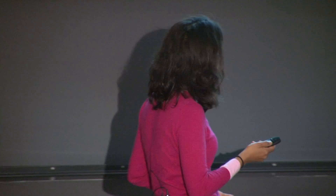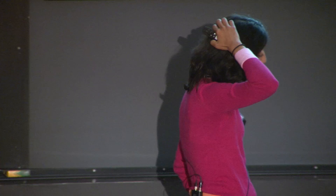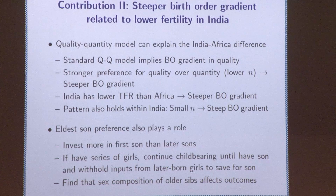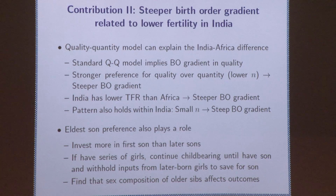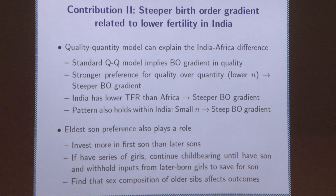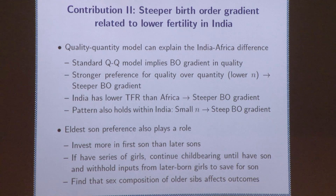We wanted to understand why this stronger preference comes from. This is the new part of the paper — a theoretical contribution. We're going to present a very standard quality-quantity model in economics that originates with Gary Becker and Robert Barrow, and show that model has an implication that hasn't been noticed before: it generates a birth order gradient in child quality. For families that have a stronger preference for quality over quantity — smaller family size — they're going to have a steeper birth order gradient in such a model. That offers an explanation for why birth order gradients would be steeper in India than Africa, since there is considerably lower fertility in India than in Africa.